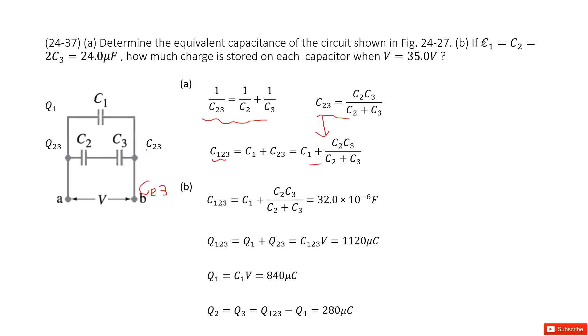We look at part B. Now it gives you the quantity for C1, C2, C3 and the voltage V there. It asks you to find the charge on each capacitor. So at the very beginning, we can input C1, C2, C3 and then get the equivalent capacitance C123 there. You get the answer there.